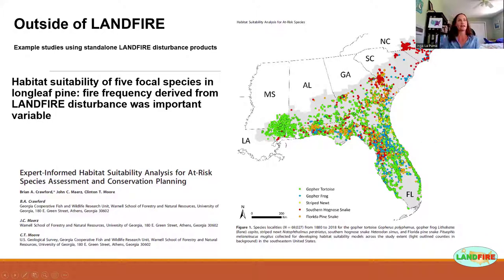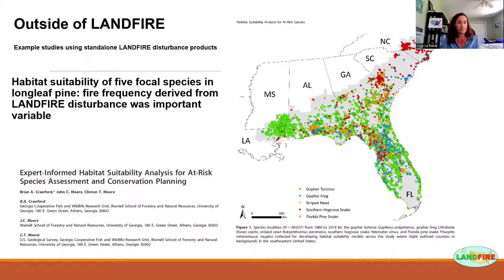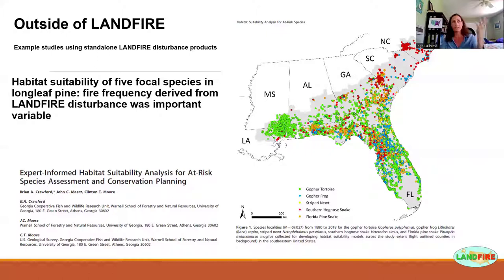It's not the only thing that uses Landfire disturbance data. It's actually a really useful dataset as a standalone product, and that's one reason I wanted to highlight the disturbance suite — a lot of people aren't even aware it exists. For example, this particular study used fire frequency derived from Landfire as a variable in a habitat suitability model and found it was an important variable for species in the longleaf pine ecosystem.